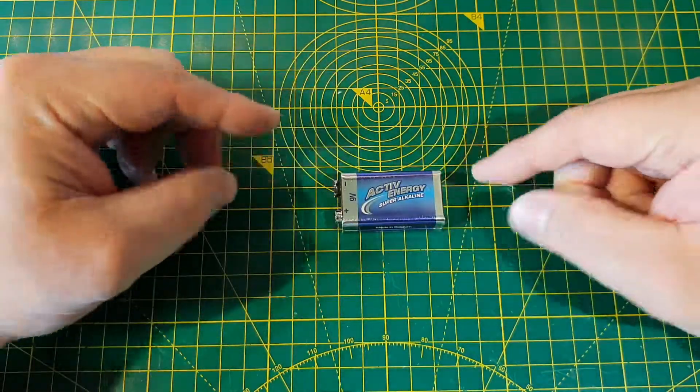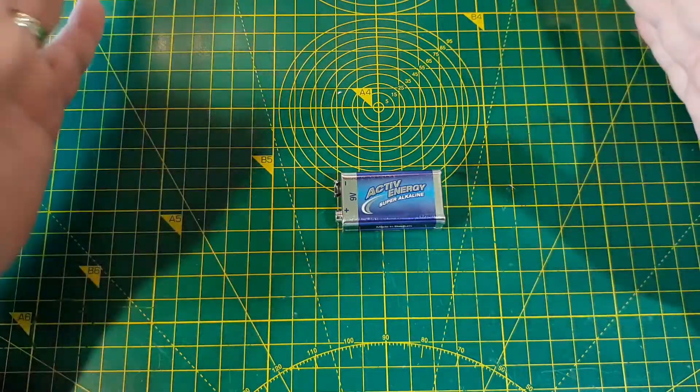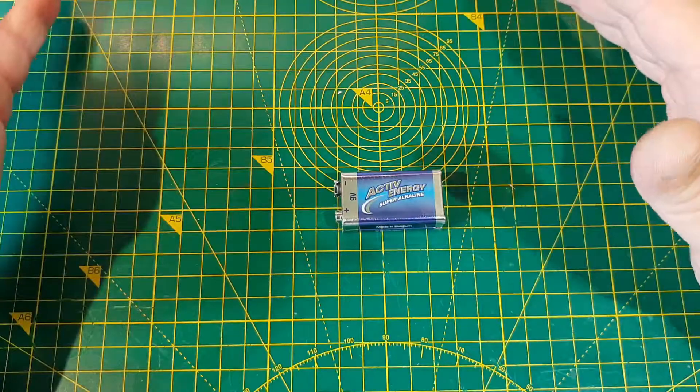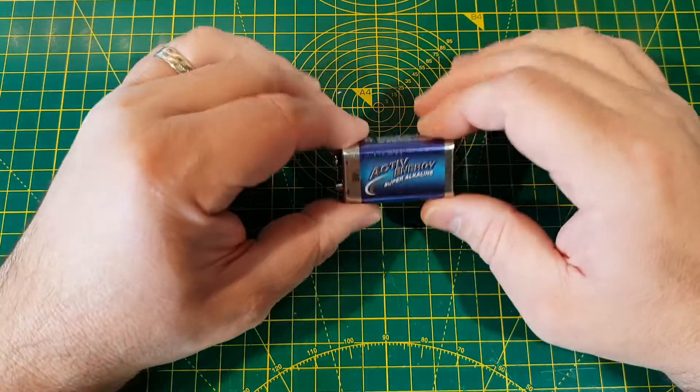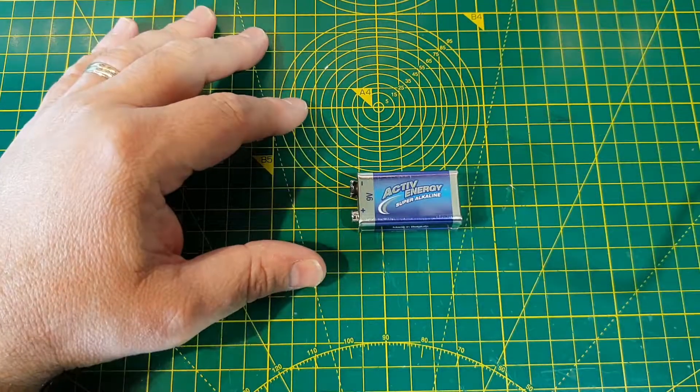So I've got this one here, it's an Active Energy, I think it's an Aldi own brand. Again it's fully charged. I don't have a discharged one, I could probably discharge it but that will take the fun out of it. See if something can go bang here. I don't think it will go bang but it might get a spark or a fizz.